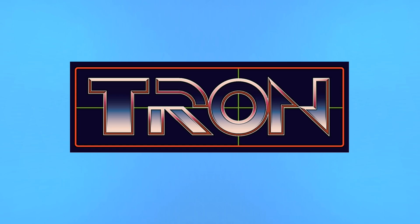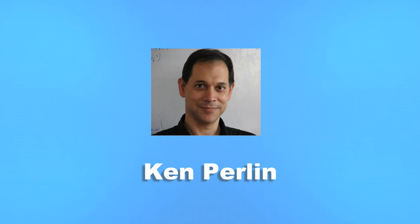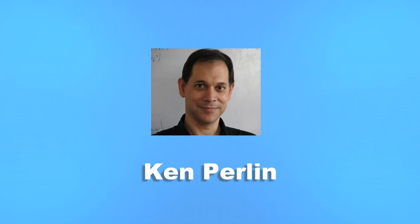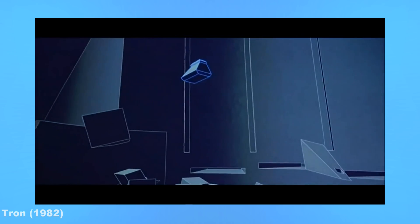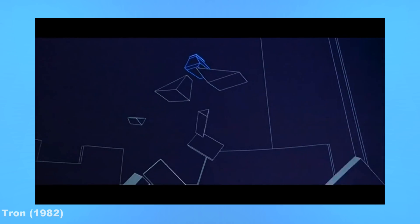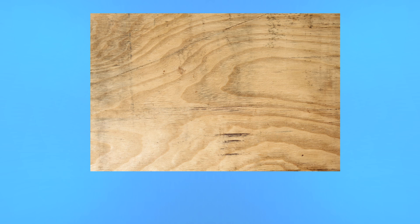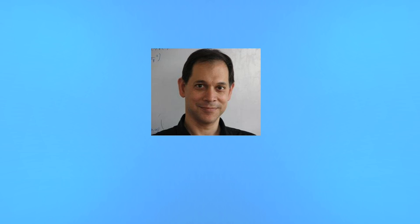While working on Tron, Ken Perlin wasn't too fond of all these clean-looking renders, and came up with an Academy Award-winning solution. Instead of holding onto an image drawn or photographed into the computer, Perlin thought to just define an image mathematically, so the computer could calculate any point when necessary.